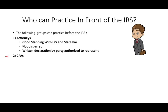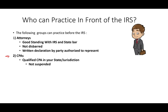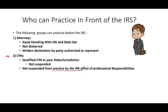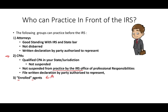The second group is CPAs. You have to be a qualified CPA in your state or jurisdiction, and your CPA license cannot be suspended. You also cannot be suspended by the IRS Office of Professional Responsibility — your state and the IRS are separate. You must also have a written declaration by the party who appoints you. The third group is enrolled agents. There are also enrolled actuaries and enrolled retirement plan agents, but the key group here is enrolled agents — EAs — who pass the three-part IRS enrolled agent exam.